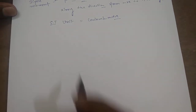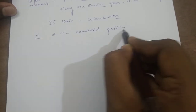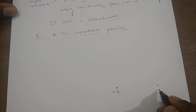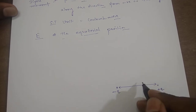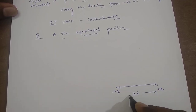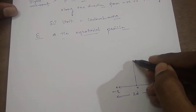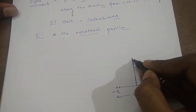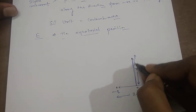Now coming to the next topic — we have to find out E at the equatorial position. Let us suppose this one is the minus Q charge of the dipole and this one is the plus Q charge, and they are separated by a distance of 2D. Their center is O, and at this center O we draw a perpendicular. This line is actually known as the equatorial line. We suppose that there is a point B, and this point B is at a distance R from the center O.